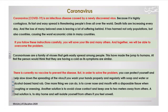Let's read the paragraph all together. Coronavirus. 'Coronavirus is an infectious disease caused by a newly discovered virus. Because it is highly contagious, it spreads fast and easily. It is threatening people's lives all over the world. Death tolls are increasing every day, and the loss of many beloved ones is leaving a lot of suffering behind. It has harmed not only populations but also countries, causing the worst economic crisis in many countries.'